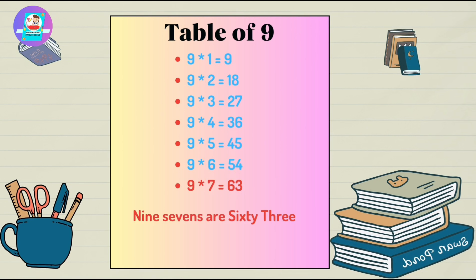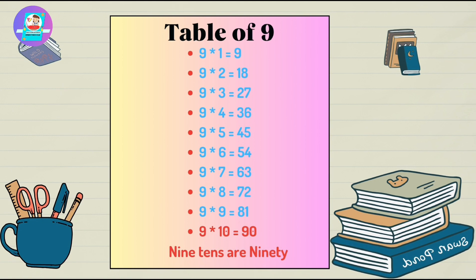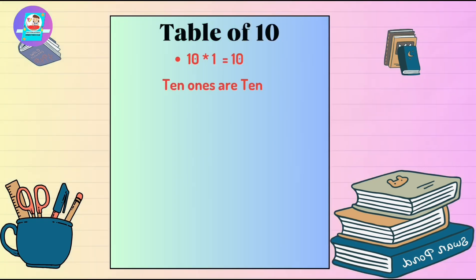9 7's are 63. 9 8's are 72. 9 9's are 81. 9 10's are 90.